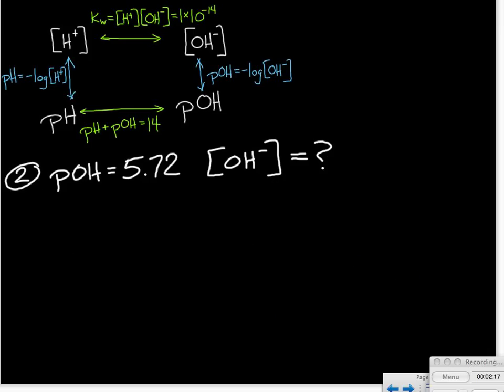Our next problem, we are given the pOH of 5.72, and we're asked to find the concentration of the hydroxide ion. So this is a pOH calculation, kind of working it backwards now. And in order to work it backwards and get rid of that logarithm term, we need to raise both sides.